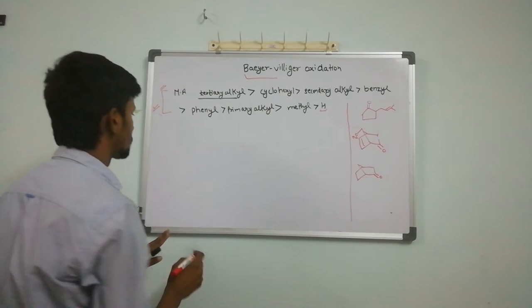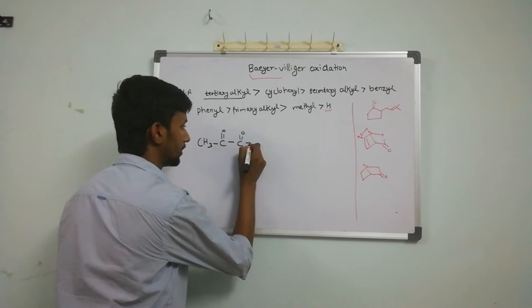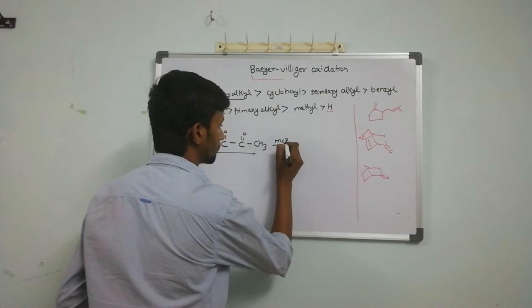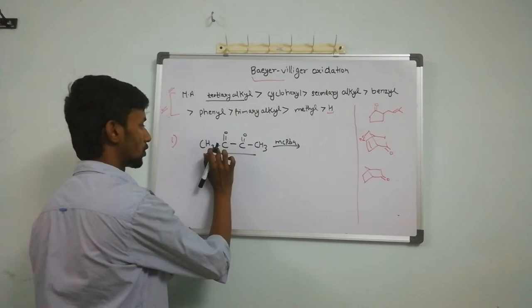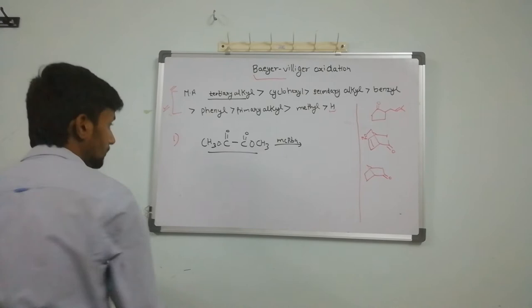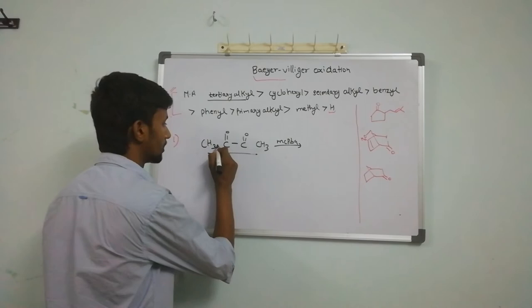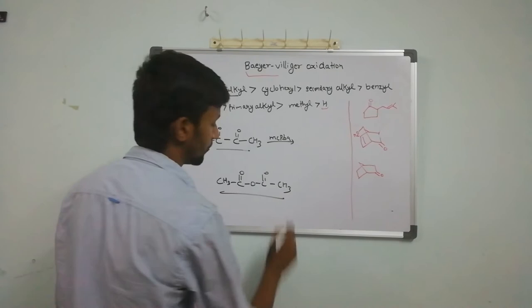It is a very easy reaction. Let's discuss some cases not found in every textbook. Suppose we have a 1,2-diketone and we use MCPBA. Generally, one might think to insert oxygen here or there, but because both groups are the same, the product is the same. Some might also insert oxygen in both positions. But in the case of 1,2-diketone with MCPBA, the insertion of oxygen is between the two carbonyl carbons, and this will be our final product.